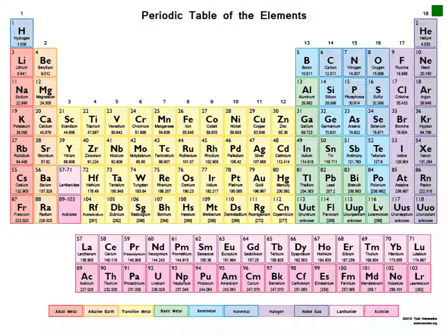Certain properties of atoms can be determined by viewing the periodic table of elements. Each box gives details on the atoms that make up a specific element. While there are up to 118 elements represented on this table, from a biological perspective there are four key elements — carbon, nitrogen, oxygen, and hydrogen — which combined make up over 96% of the human body. We will use carbon as an example on the following slides.